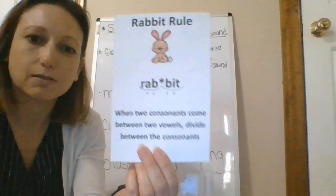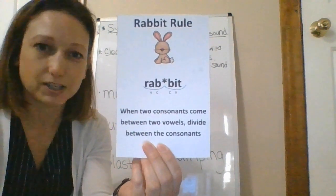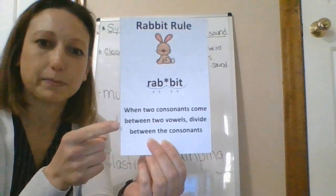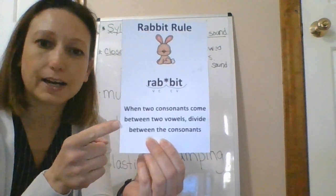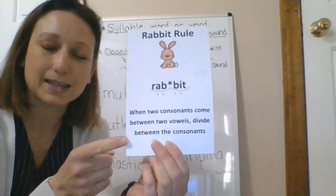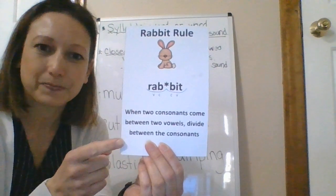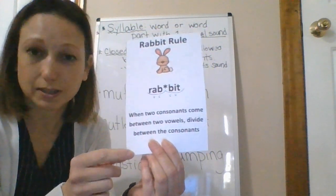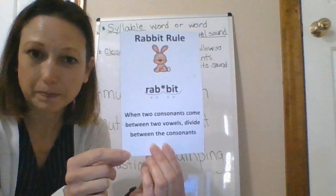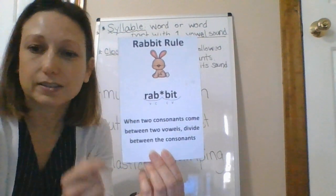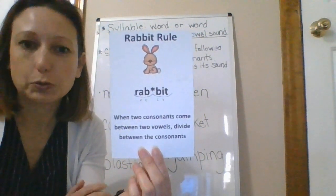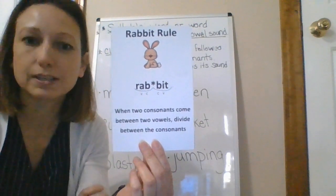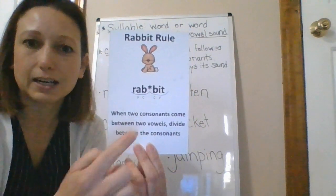This is the rabbit rule of syllable division. Our rule is: when two consonants come between two vowels, we divide between the consonants. Remember, our vowels are A, E, I, O, U, and sometimes Y — everything else is a consonant. So when two consonants come between two vowels, divide between the consonants.